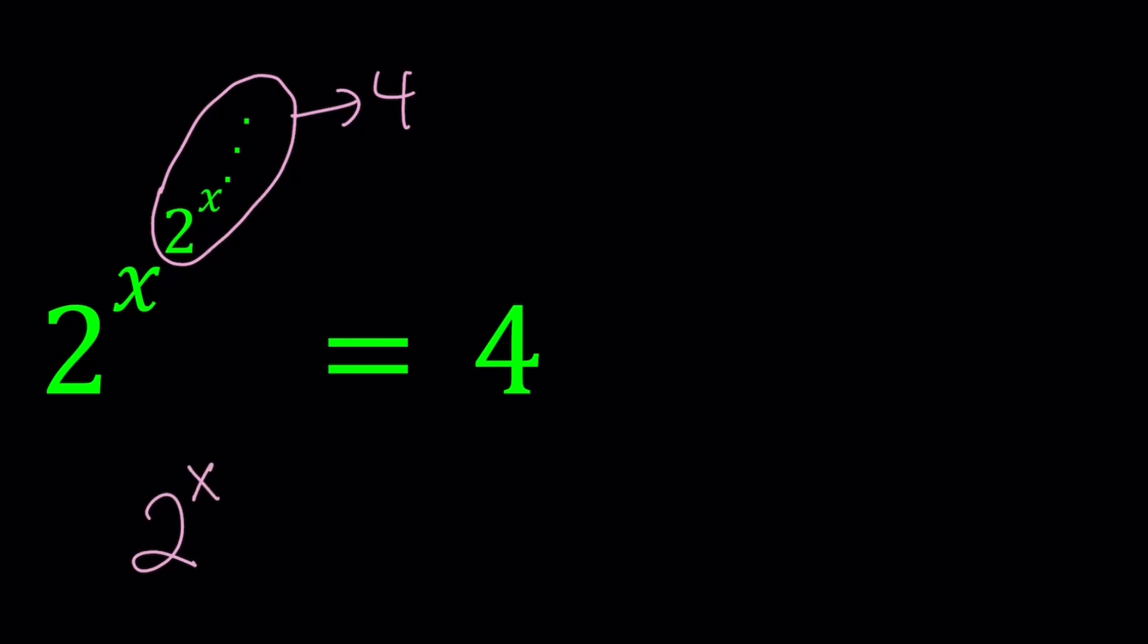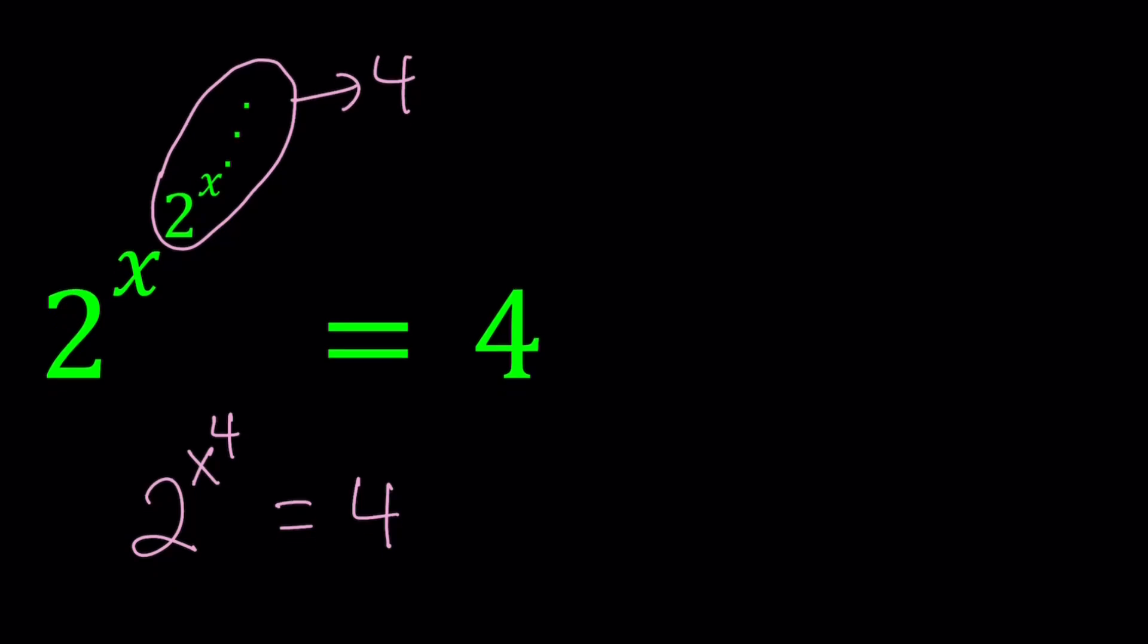2 to the power x to the power 4 equals 4. So our original assumption wasn't right because that gave us 2 to the second equals 4, but that expression didn't help us. But this will.